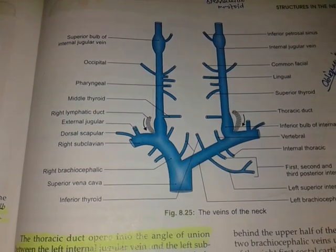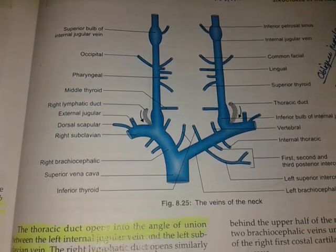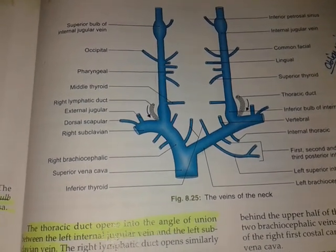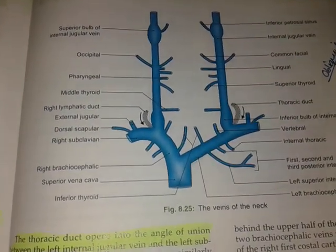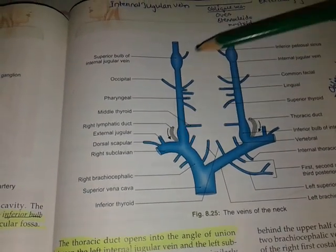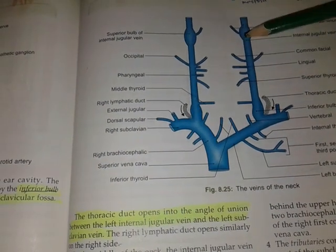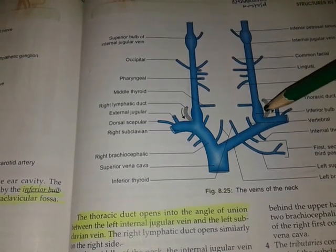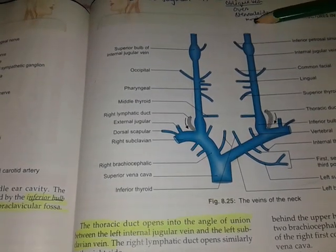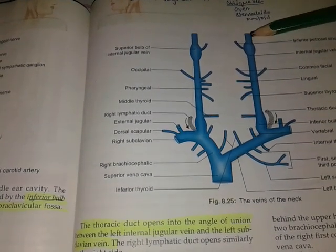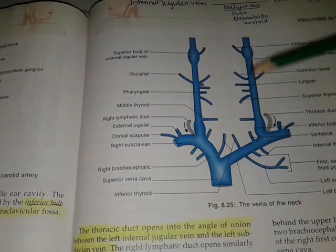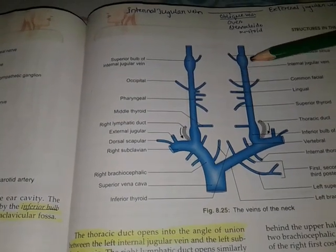Hello friends, today I am here to give you a mnemonic about the tributaries draining into the internal jugular vein. But first, we should know something about the internal jugular vein — how it is formed and where it ends. It is a continuation of the sigmoid sinus and the inferior petrosal sinus, which join to form the internal jugular vein. It has a superior bulb and an inferior bulb.